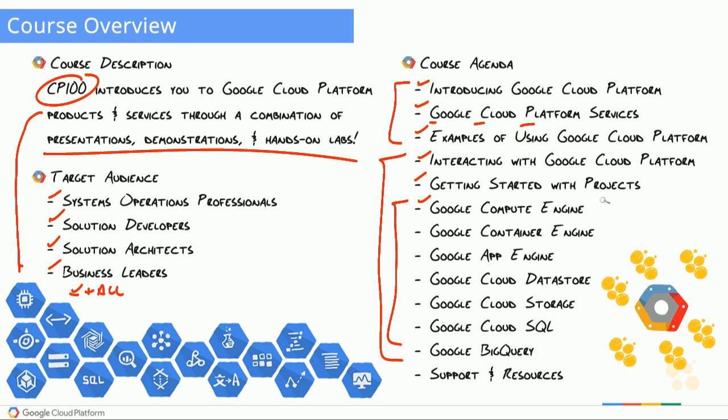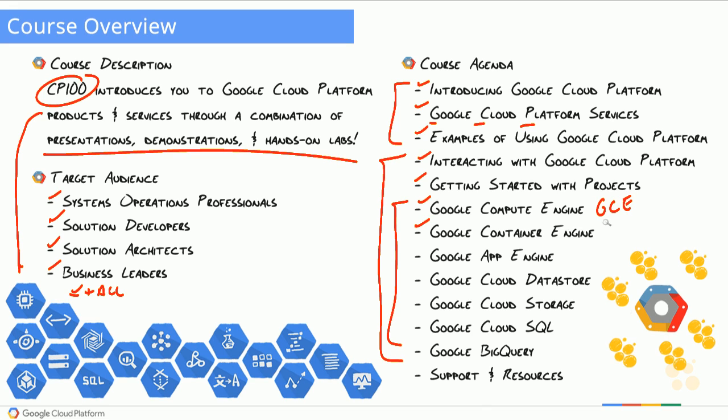Then we'll really start digging into product specifics, starting with Google Compute Engine — otherwise known as GCE. We'll see how to spin up virtual machines and create our own private networks. From there, we'll get into Google Container Engine, otherwise known as GKE.